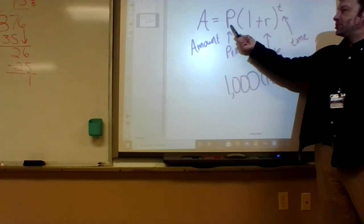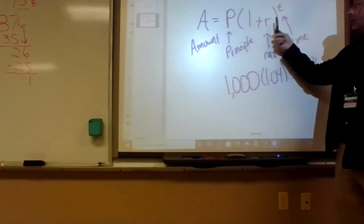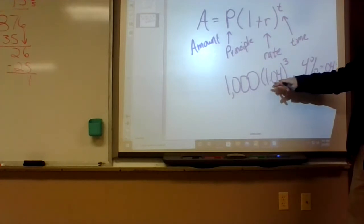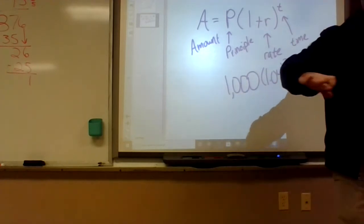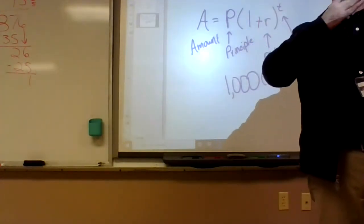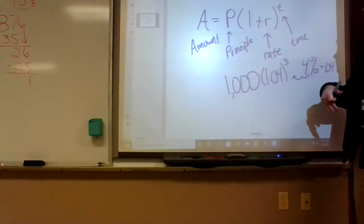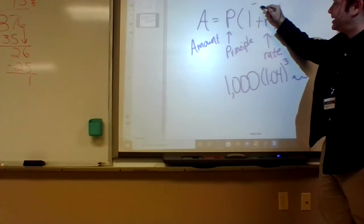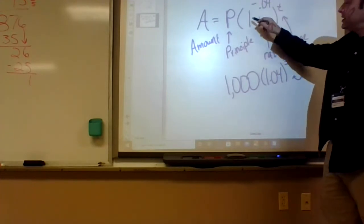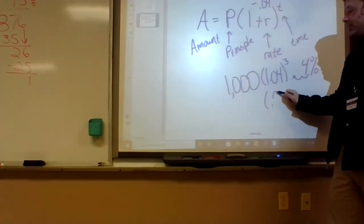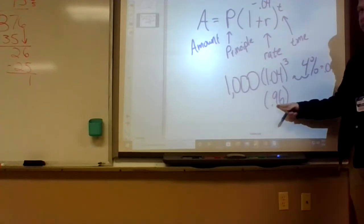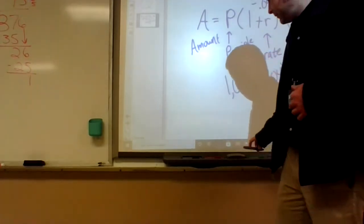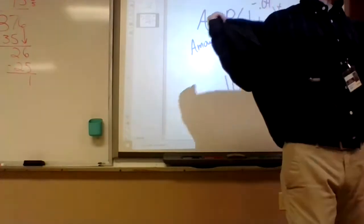Principal would be the $1,000 — the initial starting amount. It doesn't have to be a rate of increase; it could depreciate, or the population could be dropping. In that case it would be like negative 4%, so you'd be multiplying by 0.96, a number less than 1, and the value goes down.